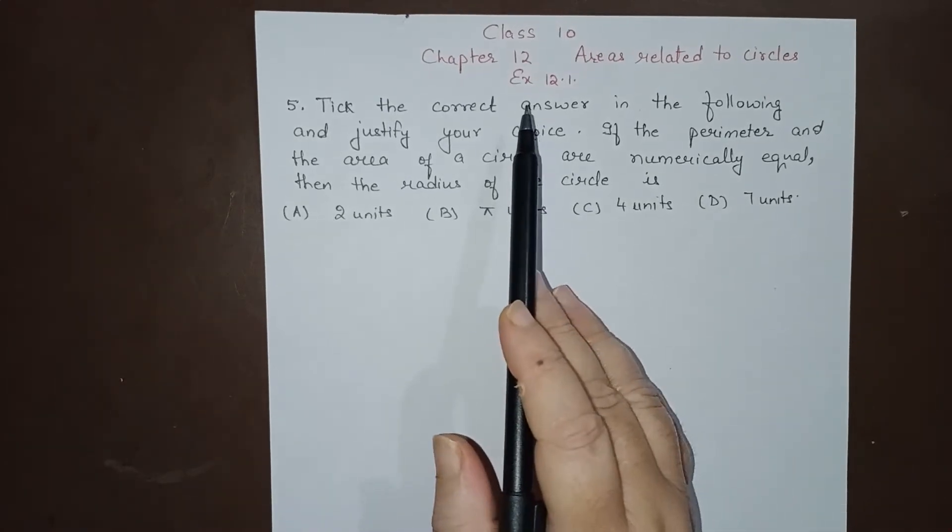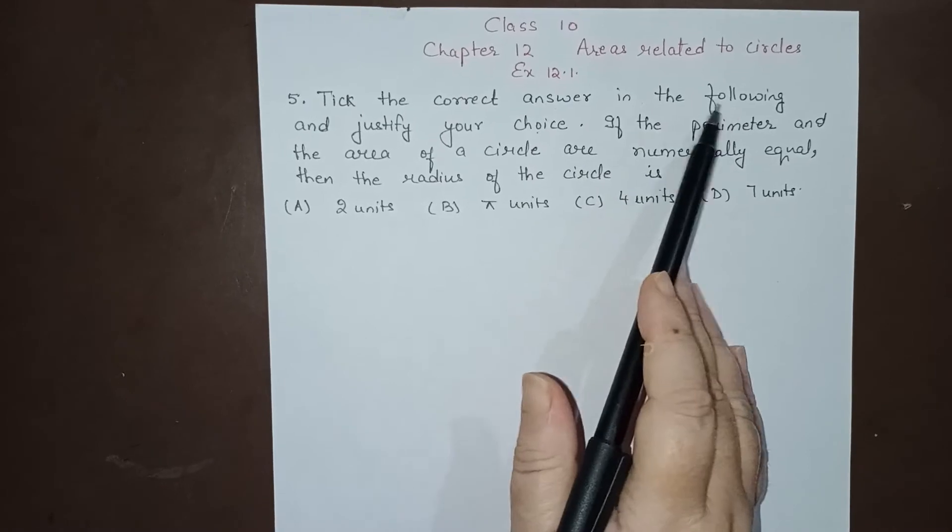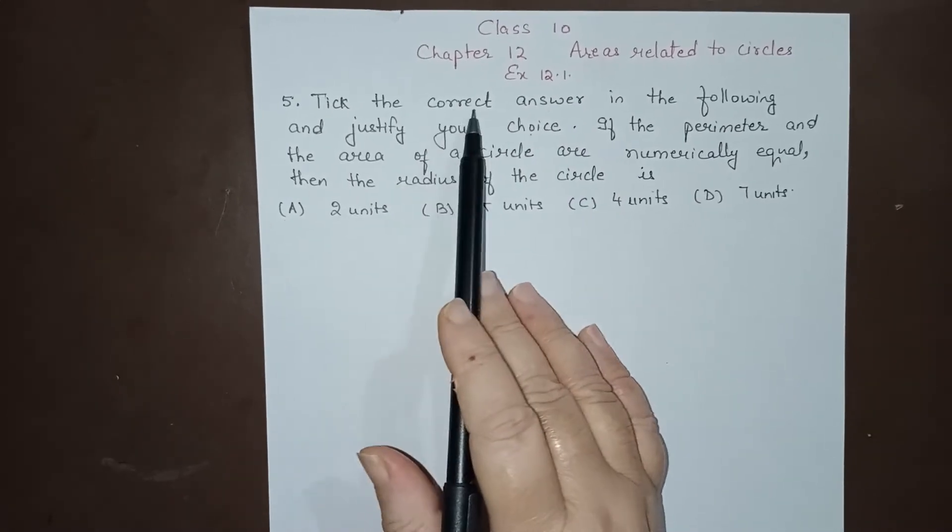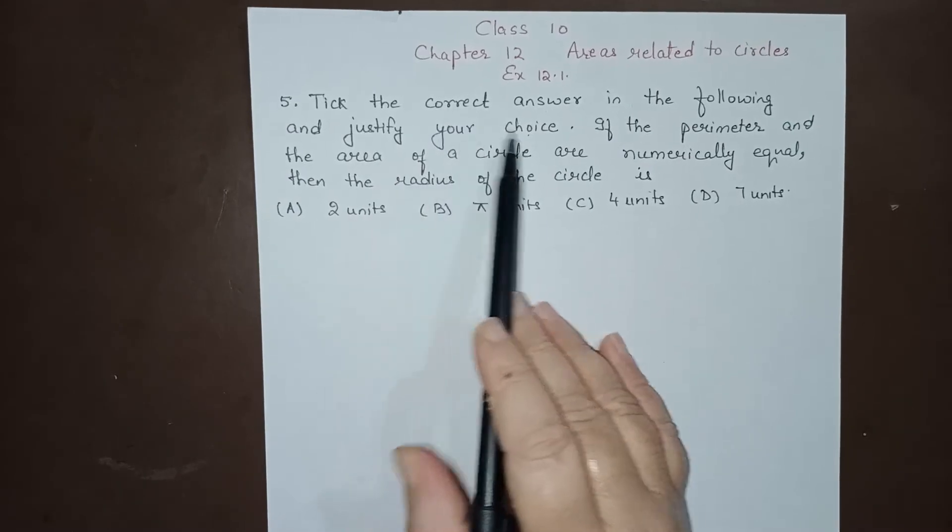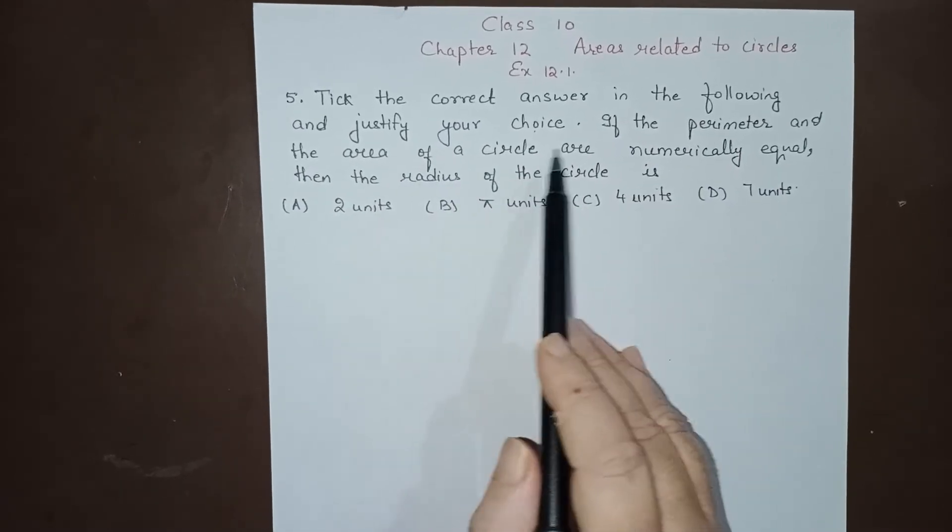Hello everyone, today we will do Class 10, Chapter 12: Areas Related to Circles, Exercise 12.1, Question 5. Tick the correct answer in the following and justify your choice. If the perimeter and the area of a circle